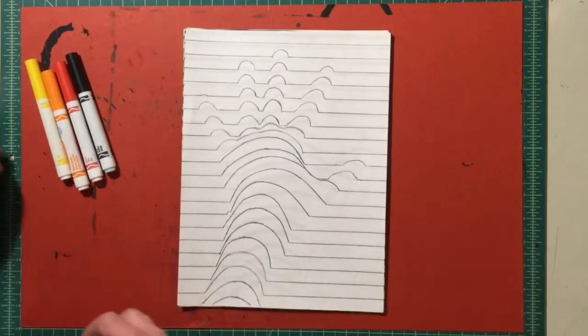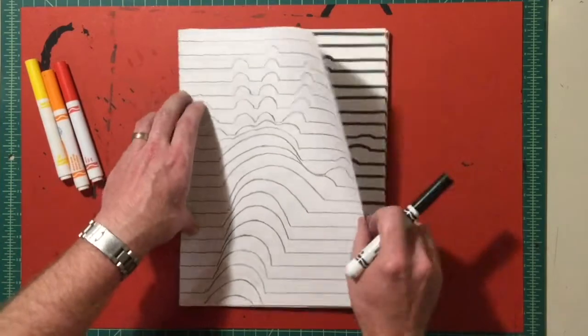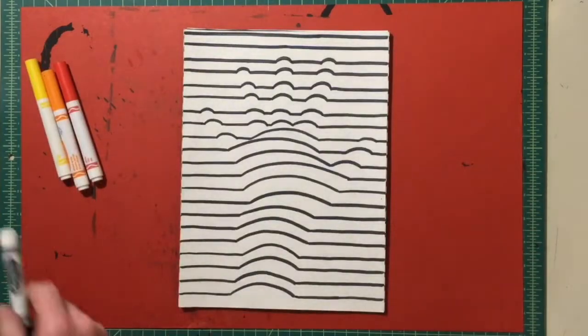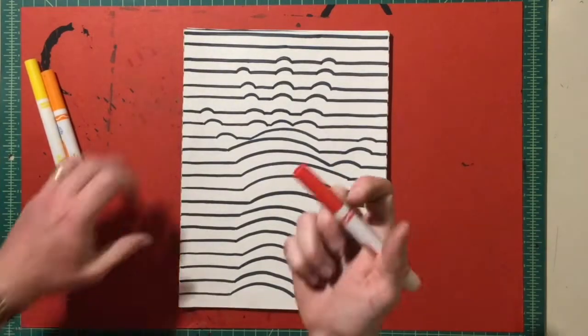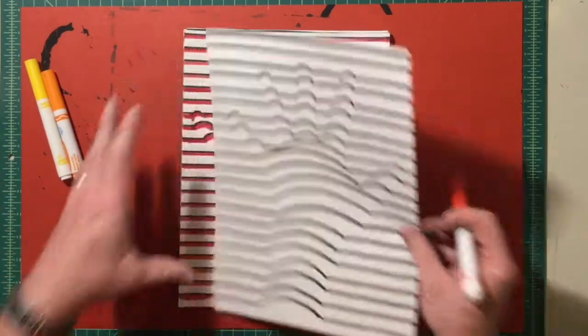And then I usually start with a black marker and I'm going to trace over every line. After you've traced all the lines in black, you can choose your colors. I like to use at least three and go from the darkest to lightest, and I want to trace underneath those black lines until the page is full.